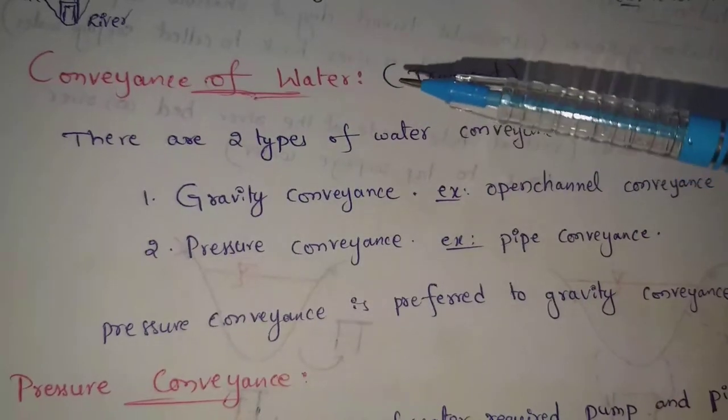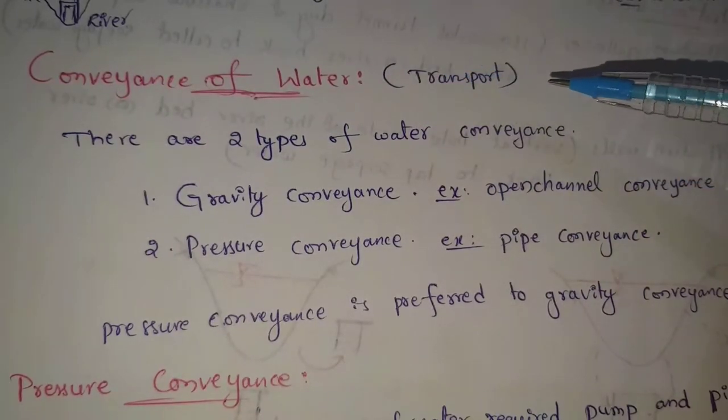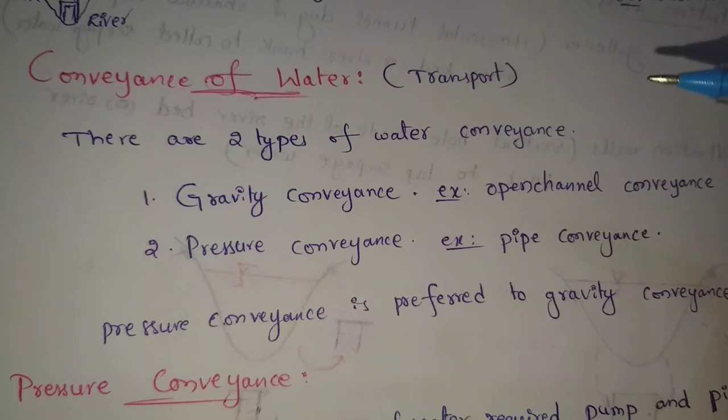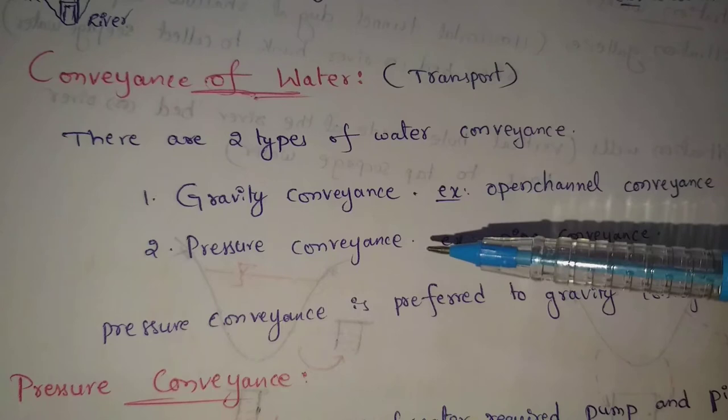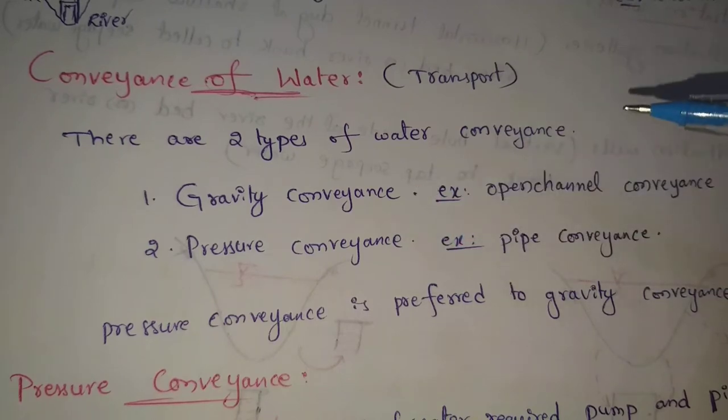Next topic: conveyance of water. Conveyance means transport of water. There are two types of water conveyance. One is gravity conveyance, and another one is pressure conveyance.